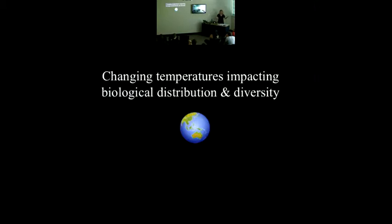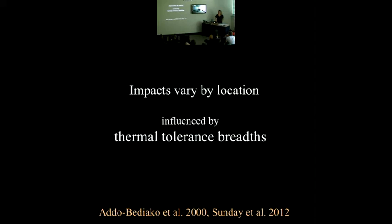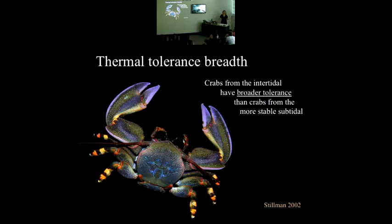Changing temperatures are affecting the distribution of species worldwide, and rising temperatures in particular are affecting plants and animals across systems. These impacts vary by location, and the biological responses to temperature are strongly influenced by the thermal tolerance breadth of the organism, which in turn is influenced by the environment. To illustrate this on a smaller scale, I'll talk about porcelain crabs. Jonathan Stillman found that crabs from more variable intertidal environments have a broader thermal tolerance than corals from stable subtidal areas.